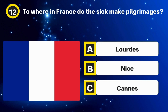Question 15. Ray Bolger played who in the Wizard of Oz? Options: The Tin Man, The Scarecrow, The Cowardly Lion. The answer: The Scarecrow.